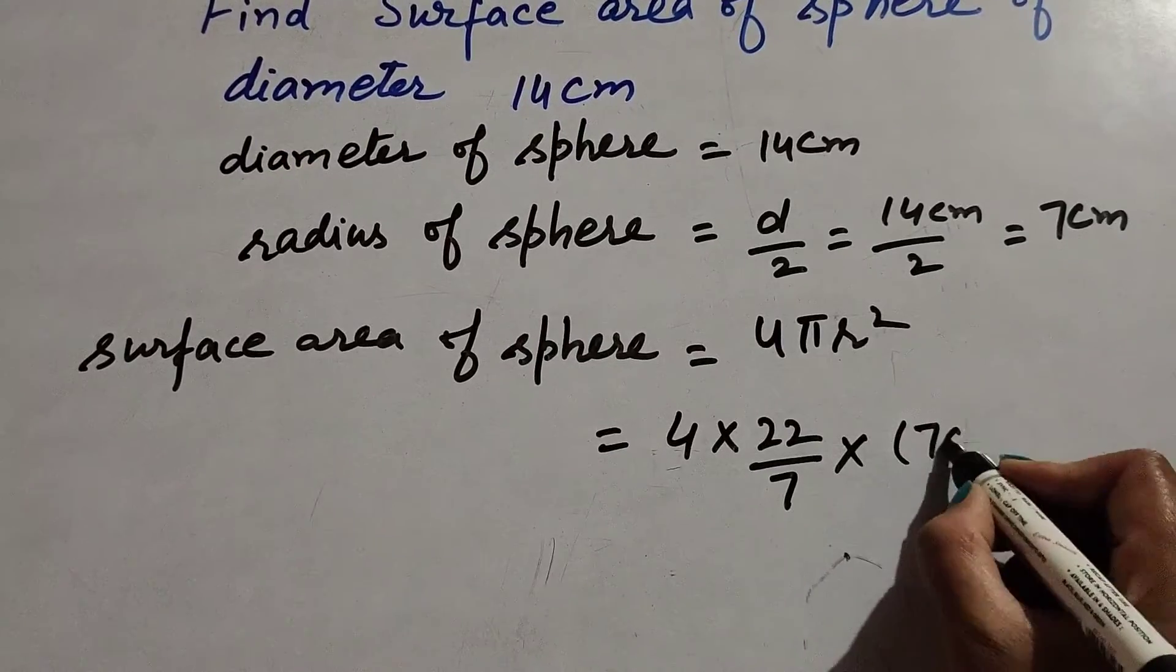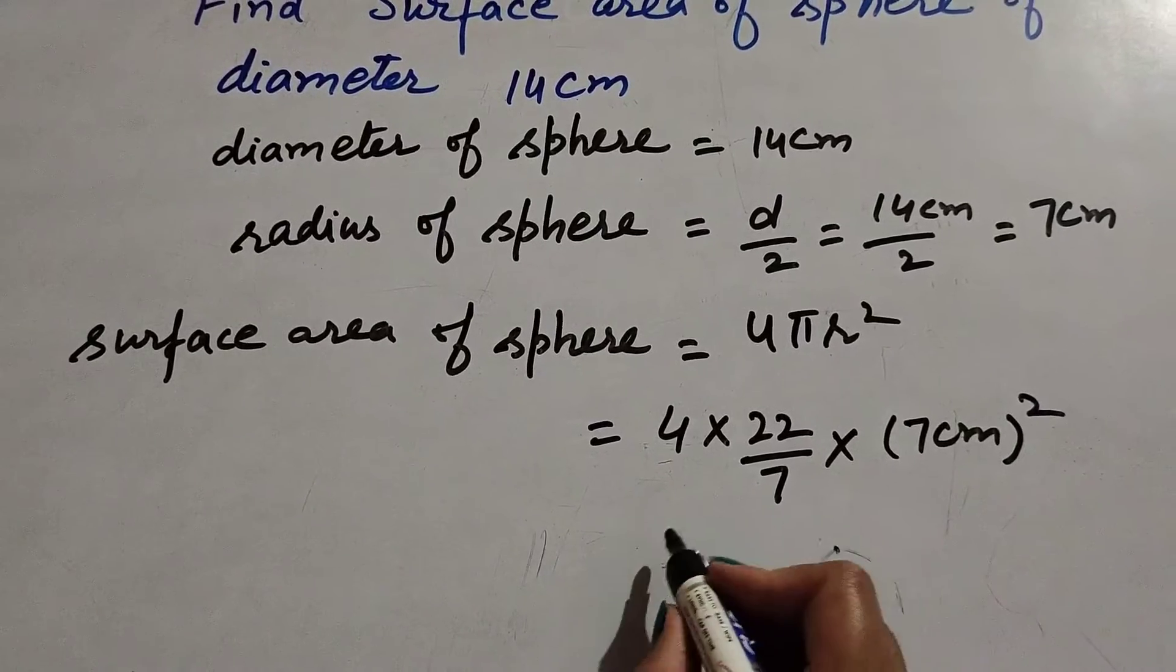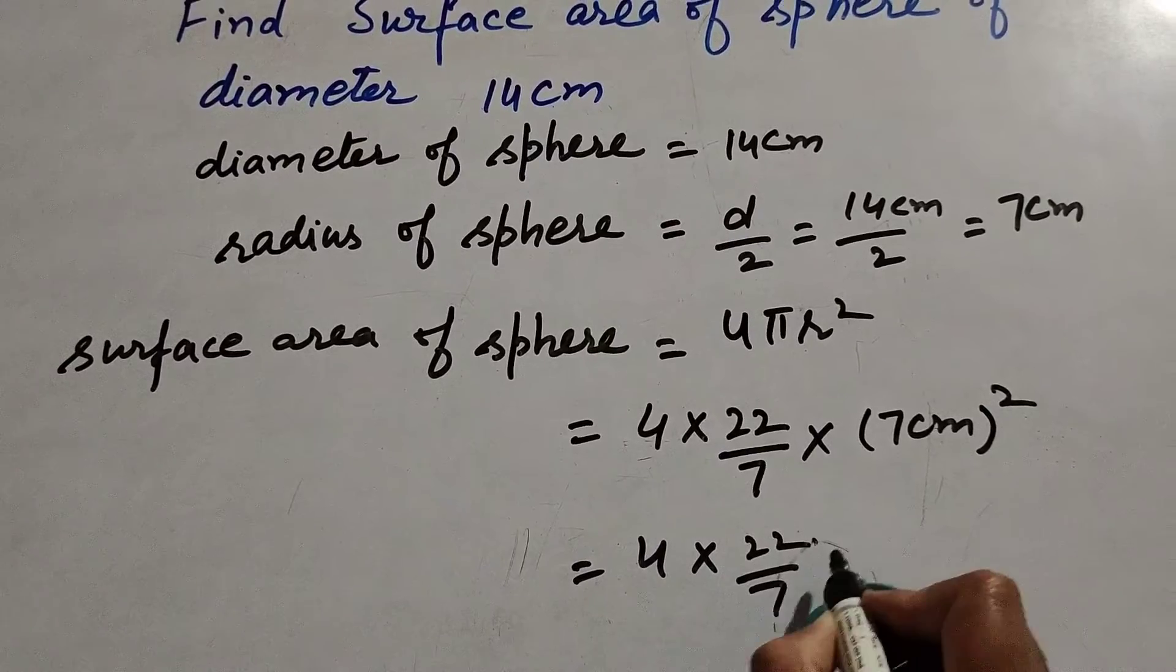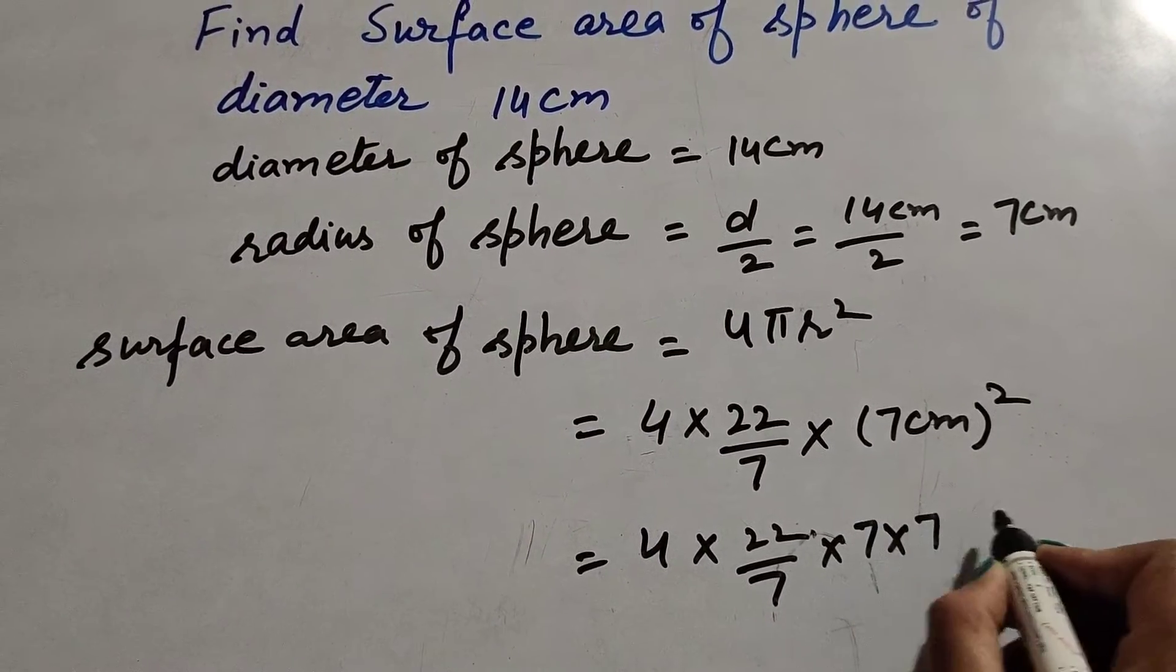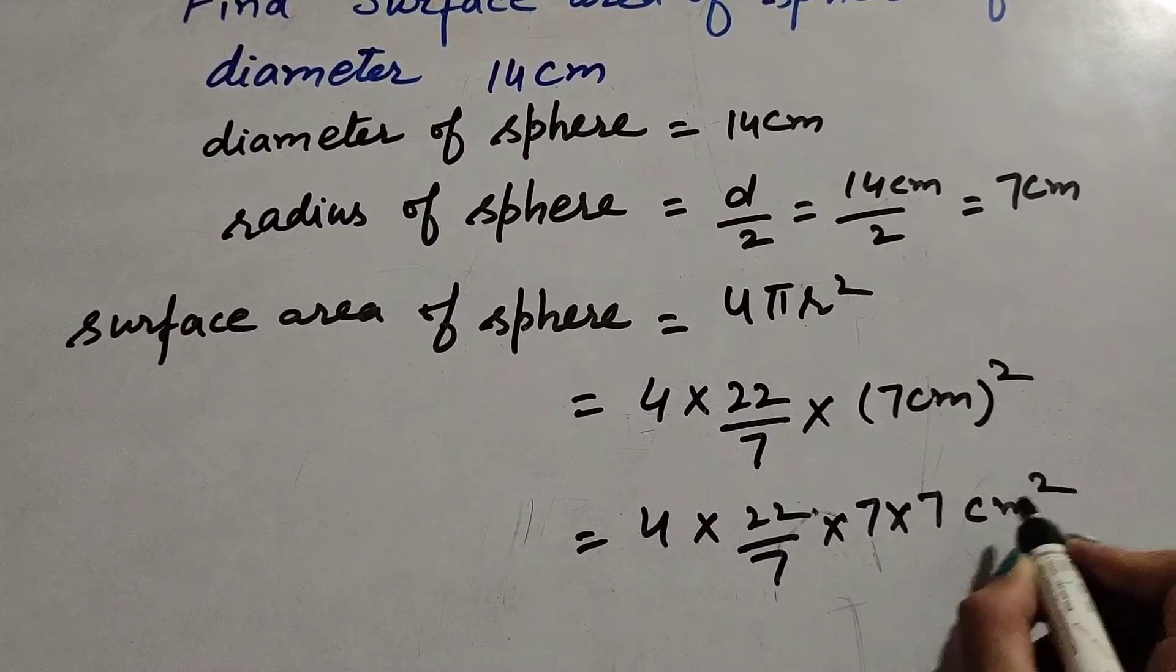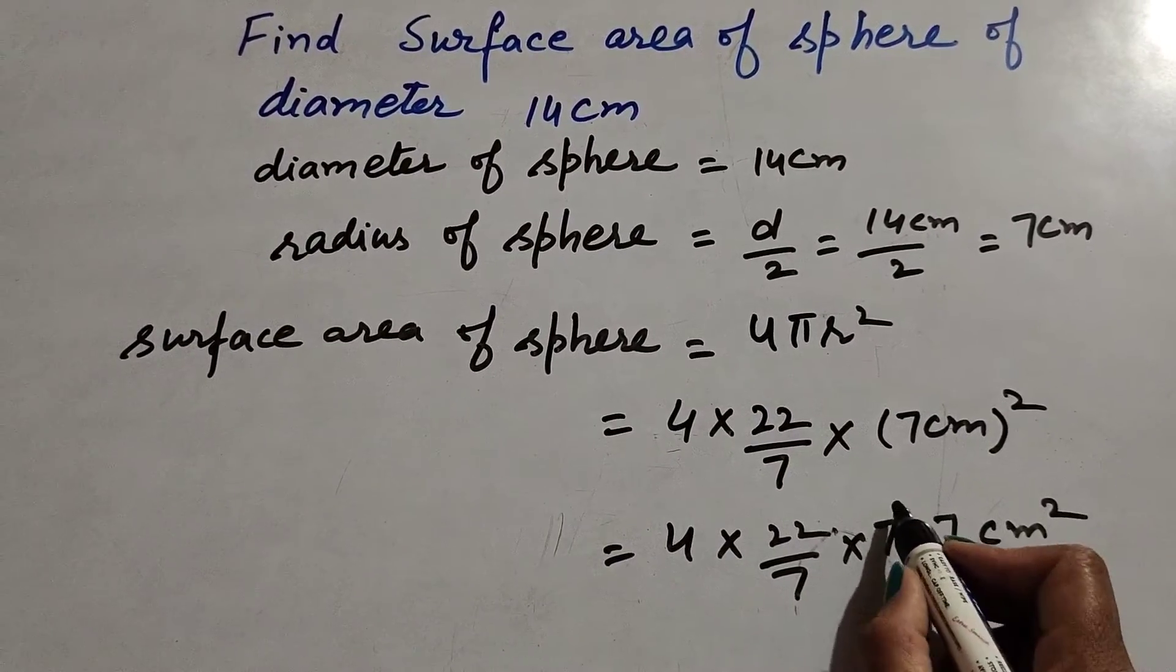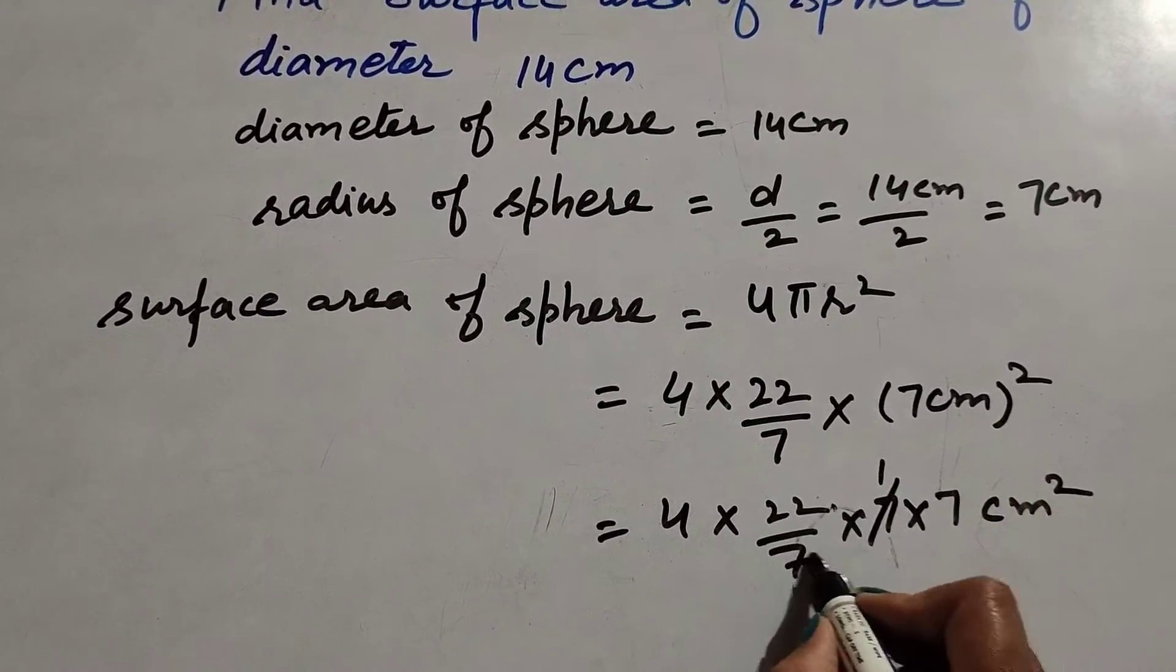It is equal to 4 multiply 22 over 7 multiply 7 multiply by 7 into centimeter square. 7 in denominator, 7 in numerator, both are divisible on the table of 7, so we cancel them. 7 ones are 7.